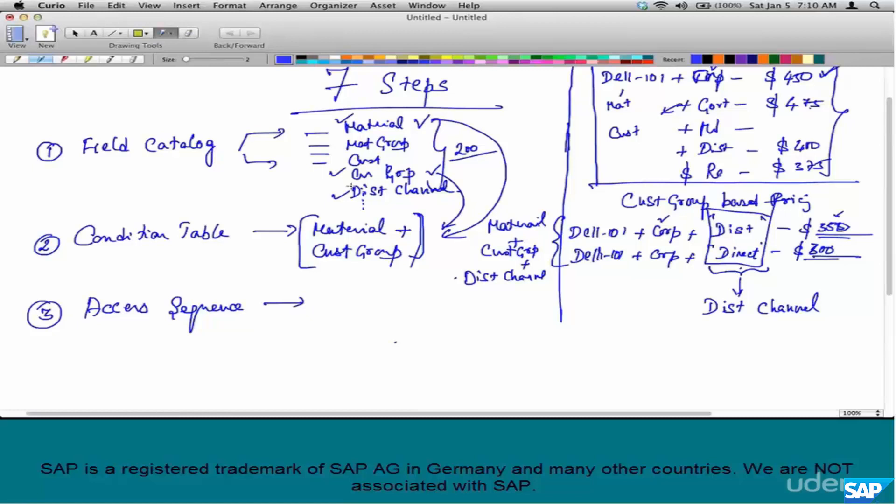So two condition tables, one with material customer group and second material customer group and distribution channel combination.